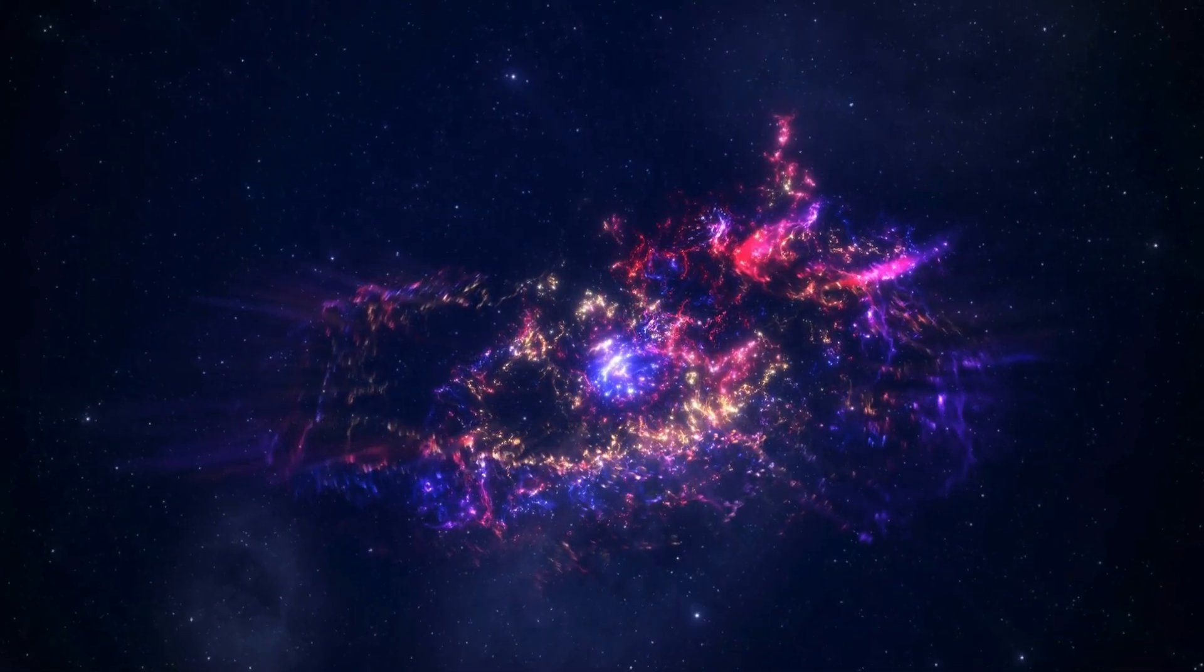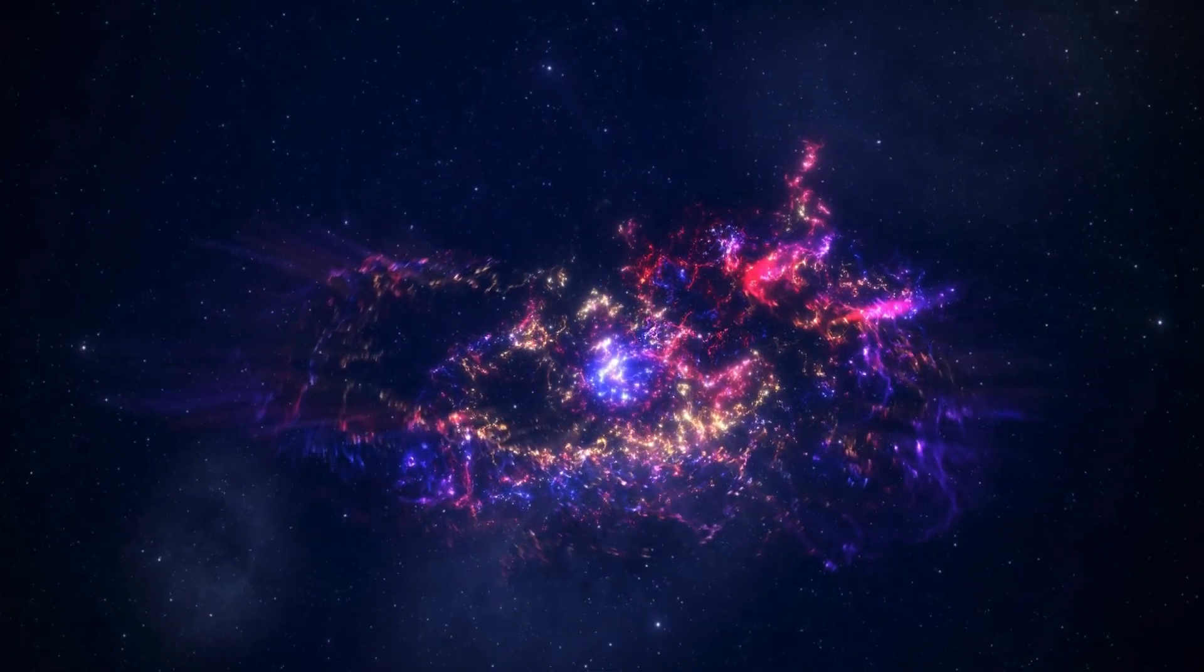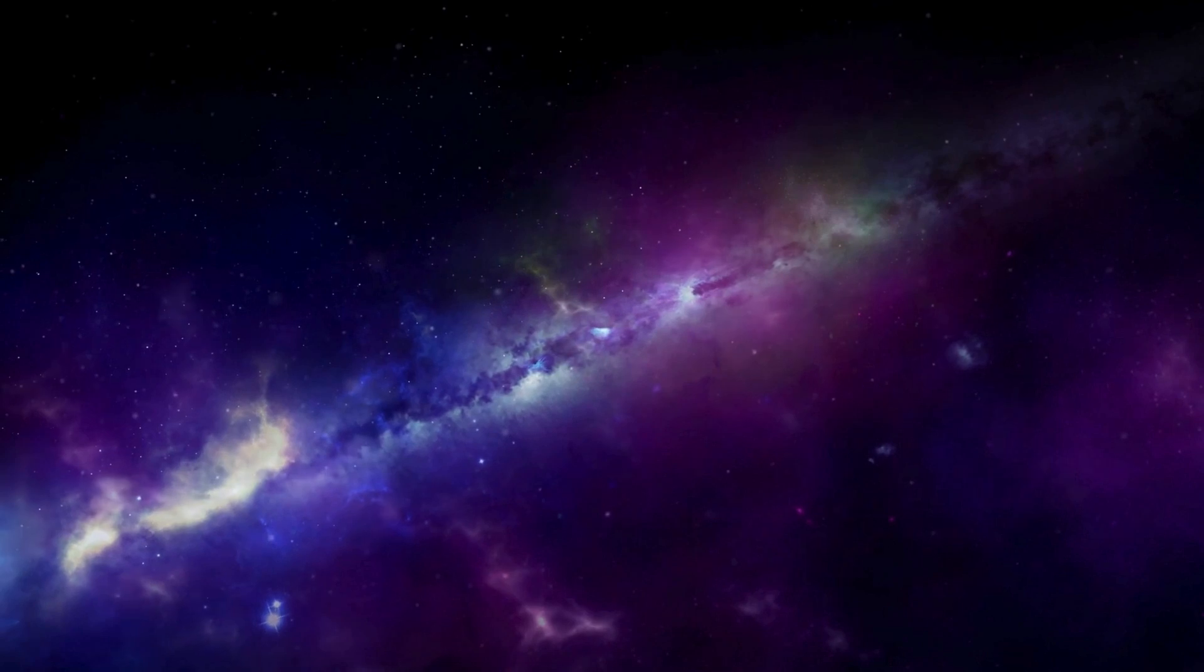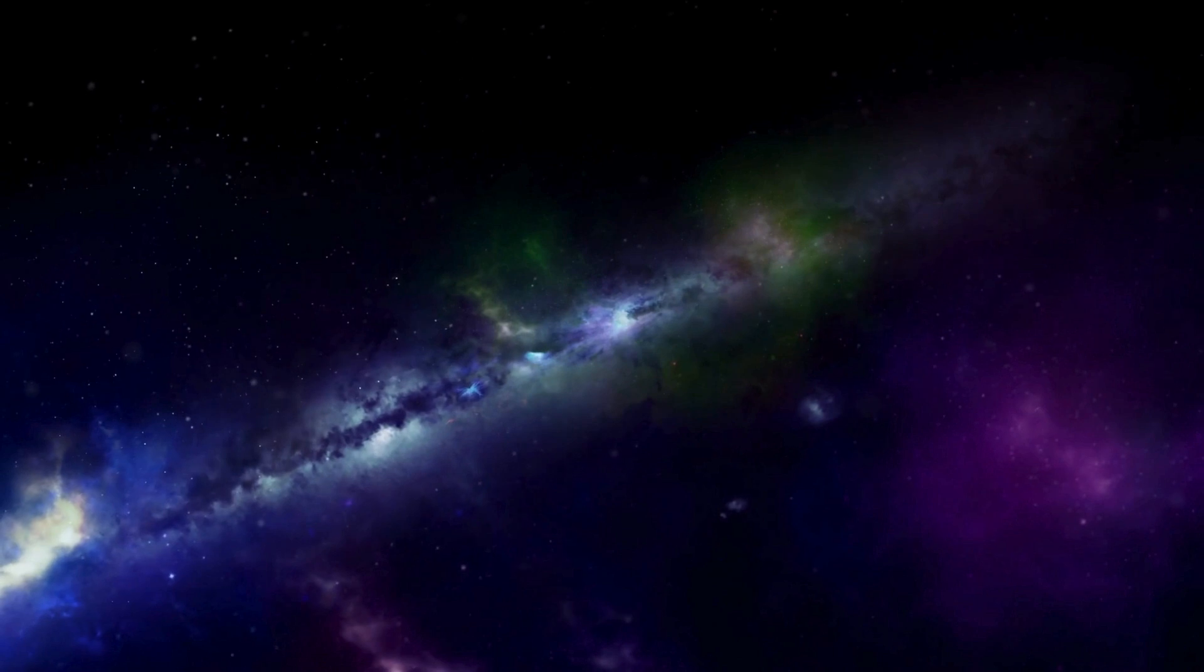But as with anything this awesome, there are some limitations. For example, the presence of an atmosphere doesn't necessarily guarantee the presence of life. Proxima b could be like Venus, with a thick, hot atmosphere that's not suitable for life.